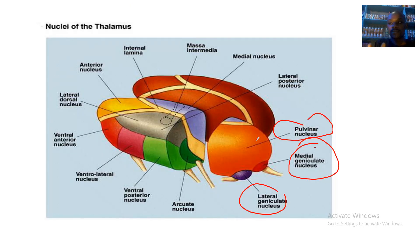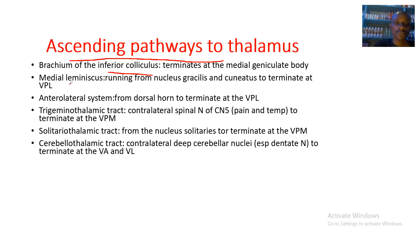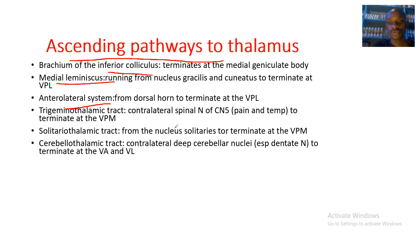These are different nuclei, but based on where they are found within one position, they are classified together. The ascending pathways to the thalamus include: the brachium of the inferior colliculus, which terminates at the medial geniculate body; the medial lemniscus, which runs from the nucleus gracilis to terminate at the ventral posterolateral nucleus; and the anterolateral system, which goes from the dorsal horn to terminate at the ventral posterolateral nucleus.